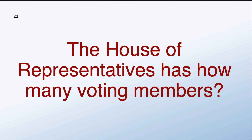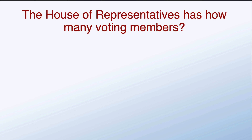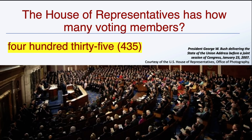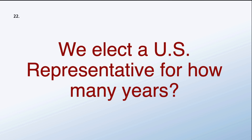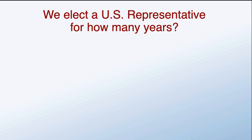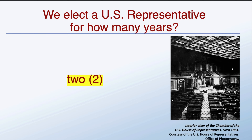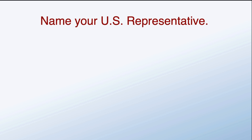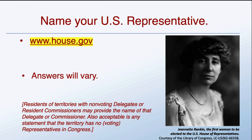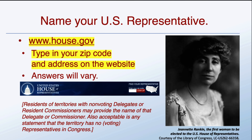The House of Representatives has how many voting members? We elect a US Representative for how many years? Two years for a US Representative. Name your US Representative — answers will vary. You'll need to go to House.gov and type in your zip code and street address to find your specific US Representative.